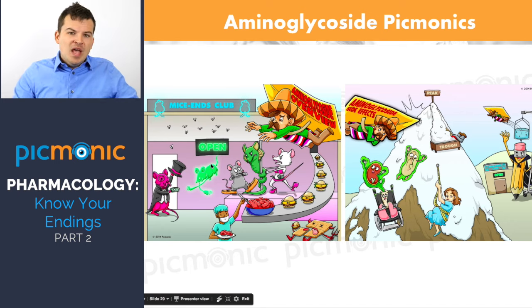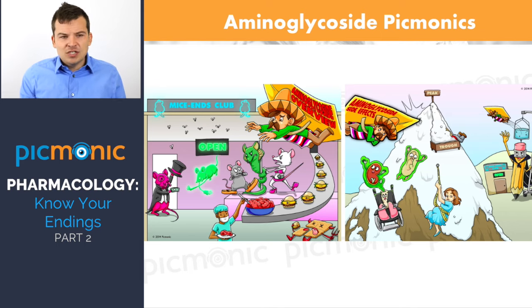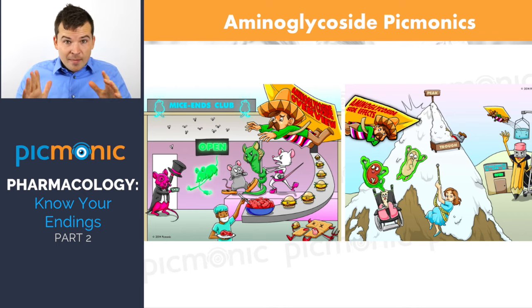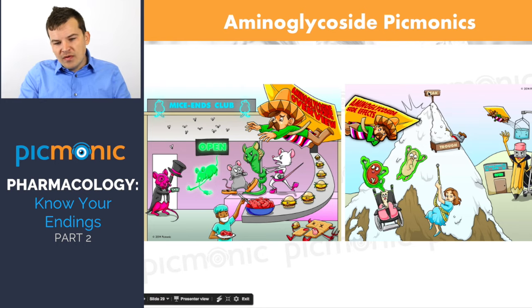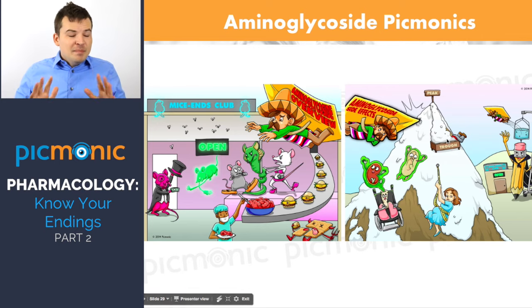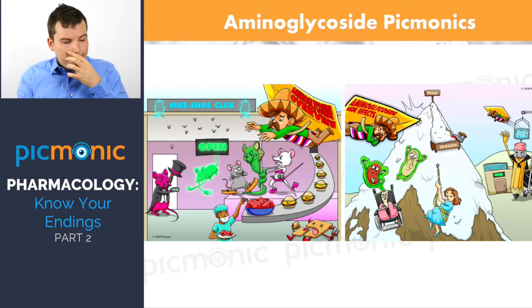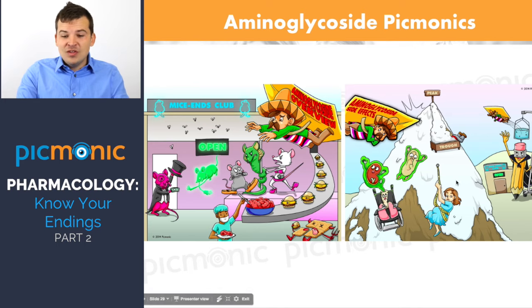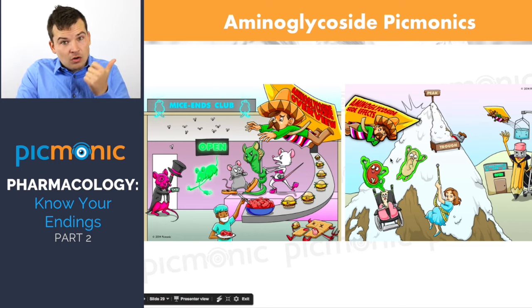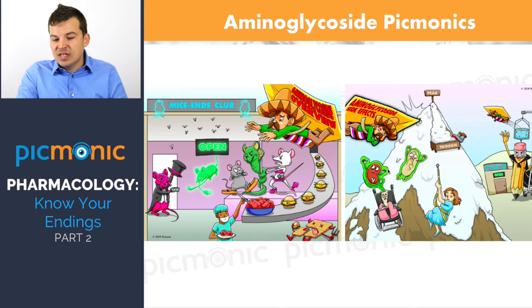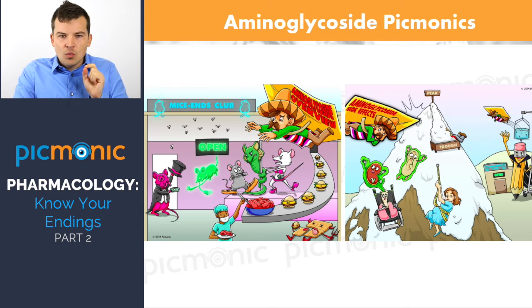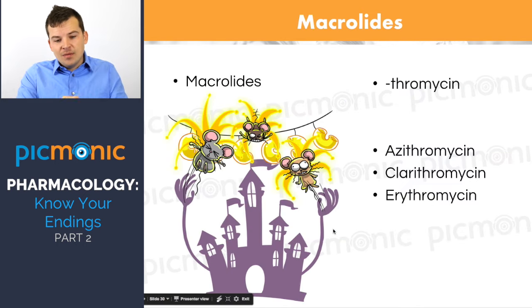Aminoglycosides are pretty toxic medications. Because of that, we monitor peak and trough levels. The two major toxicities are renal toxicity — shown by a toxic green glow kidney in the image — and ototoxicity, shown by a toxic green glow ear. Ototoxicity causes tinnitus, ringing of the ears, which is your clue that a patient may be reaching toxic levels.